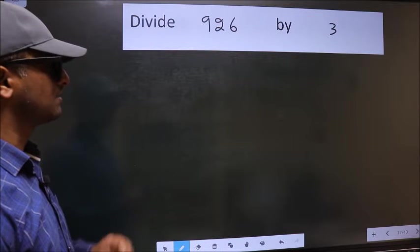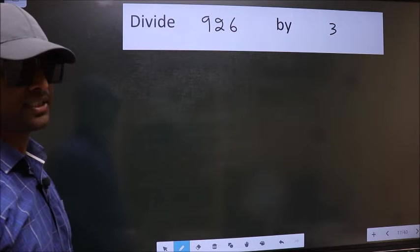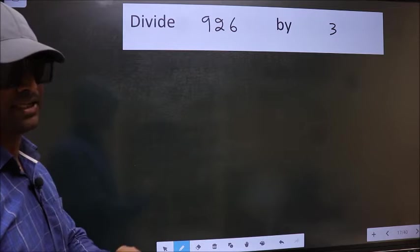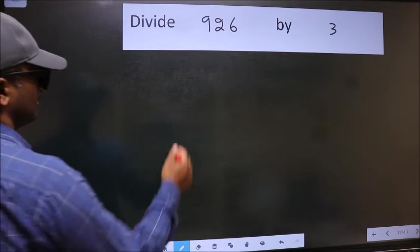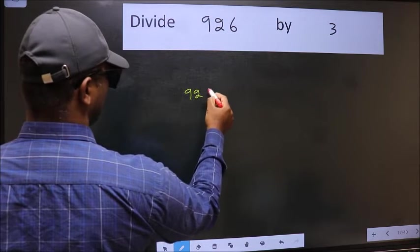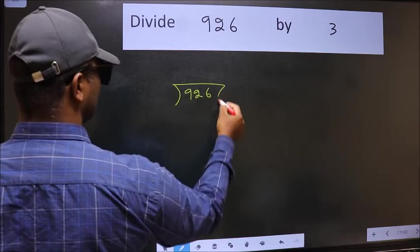Divide 926 by 3. To do this division, we should frame it in this way. 926 and 3 here.